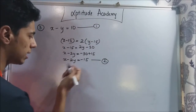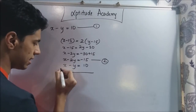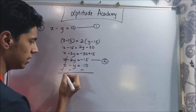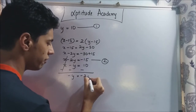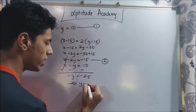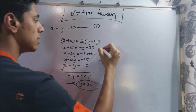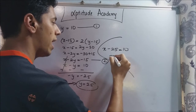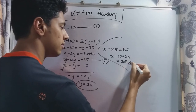Now subtracting the second equation from the first: x minus y equals 10 and x minus 2y equals minus 15. Subtracting, the x terms cancel; minus 2y plus y gives minus y; and minus 15 minus 10 gives minus 25, so minus y equals minus 25, meaning y equals 25. But y is the younger person; we want x. So x minus 25 equals 10, giving x equals 35 years. That is the age of the elder person.